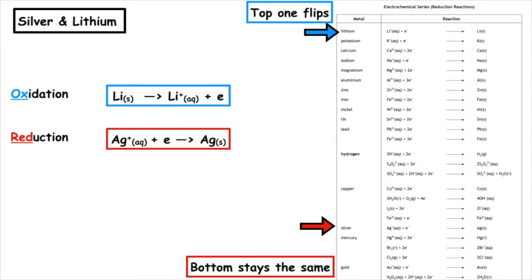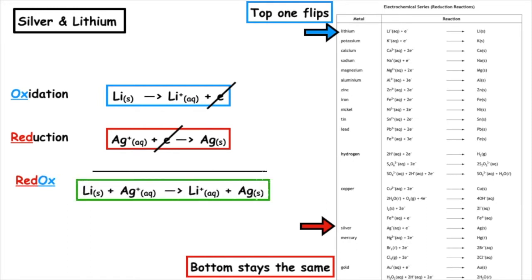We want to make sure we've got the same number of electrons on either side of both equations. We can see we've got one electron in the oxidation and one electron in the reduction, so we can cancel those out as we do a simultaneous equation. Rewriting the overall redox — top bottom top bottom — gives us: Li(s) + Ag⁺(aq) → Li⁺(aq) + Ag(s). This is the overall redox equation.